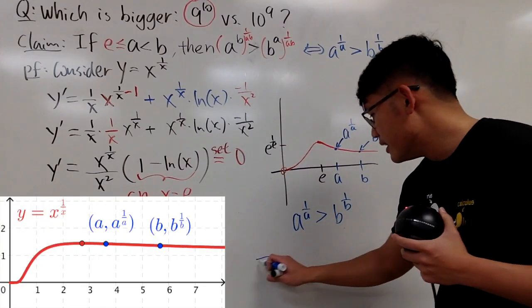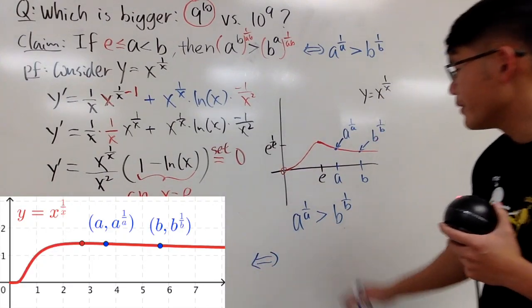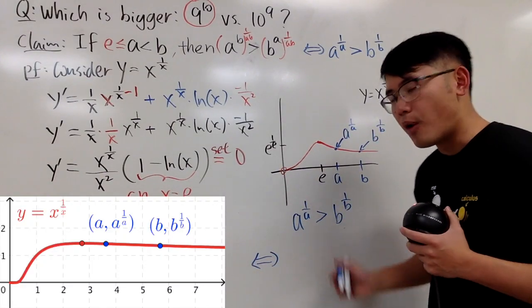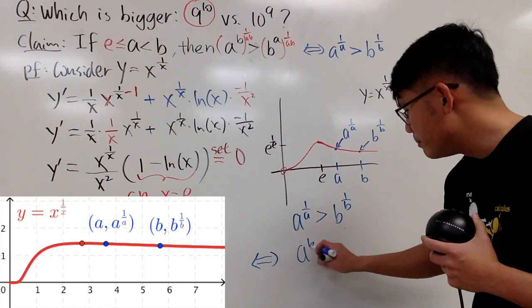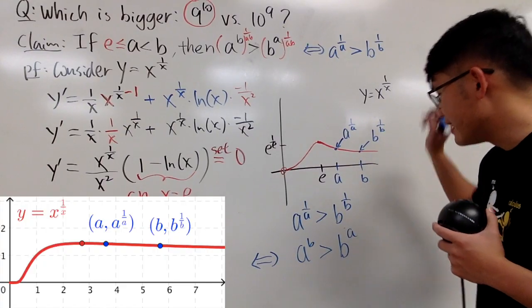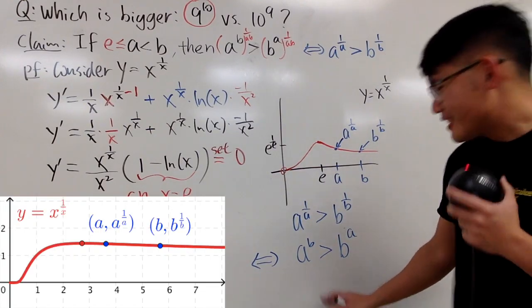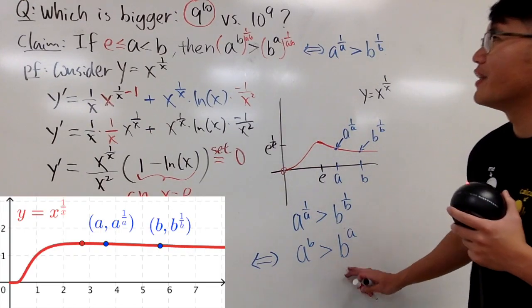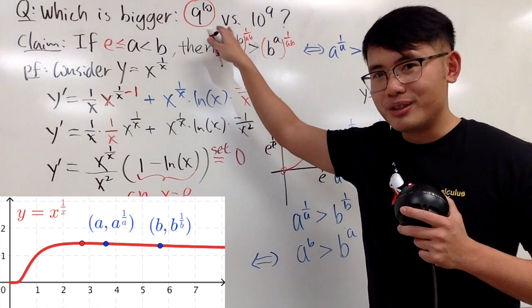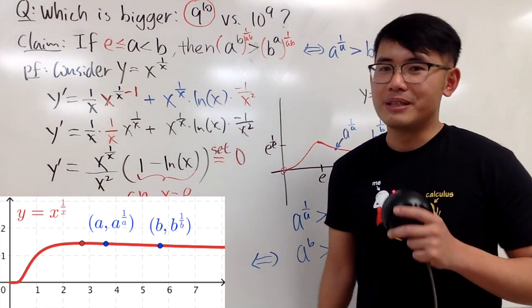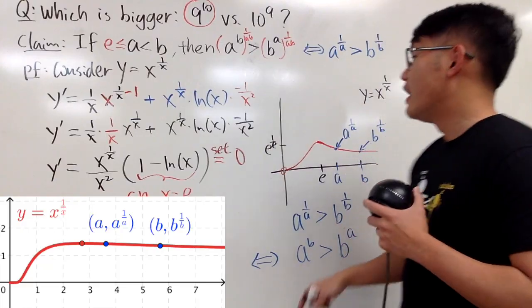So this right here is actually bigger, you can see from the graph. Therefore, you can conclude that A to the 1 over A is bigger than B to the 1 over B. Or equivalently speaking, from this picture, you can raise both sides to the AB power, and you end up with A to the B's power greater than B to the A's power. Very, very cool. So as you can see, we have this. That's how we were able to do this. It's within a split of a second.